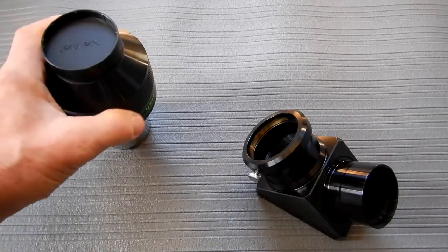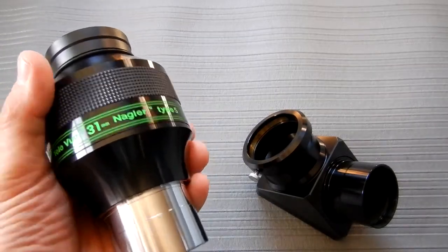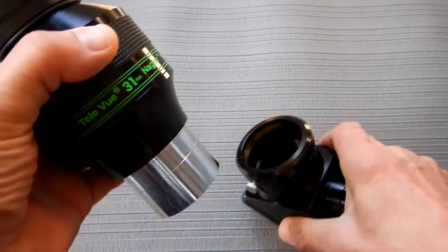Let's see how one of my favorite eyepieces fits in here. This is the TeleVue 31 millimeter Nagler Type 5. I love this wide-angle eyepiece.